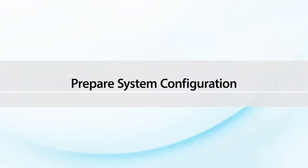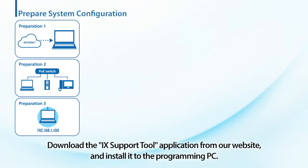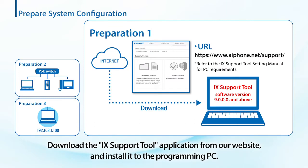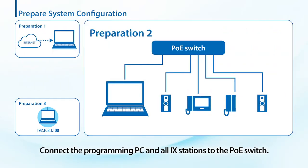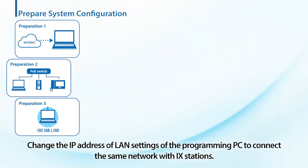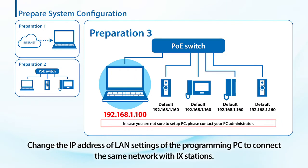Before starting the configuration, the following preparations are required. Download the IX support tool application from our website and install it to the programming PC. Connect the programming PC and all IX stations to the PoE switch. Change the IP address of the LAN settings of the programming PC to connect to the same network with IX stations.